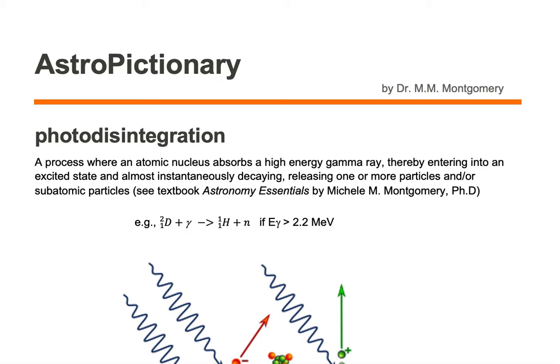Photodisintegration is a process where an atomic nucleus absorbs a high-energy gamma ray, thereby entering into an excited state and almost instantaneously decaying, releasing one or more particles and/or subatomic particles.